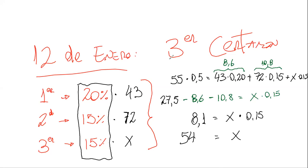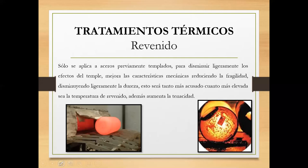Entonces haga este desarrollo con las notas que tiene — cambie ese 43 y ese 72 por sus notas reales; los porcentajes no van a cambiar. Después de terminado este tema de tratamientos térmicos, pasamos a ver situaciones específicas de algún estudiante si le falta alguna nota.